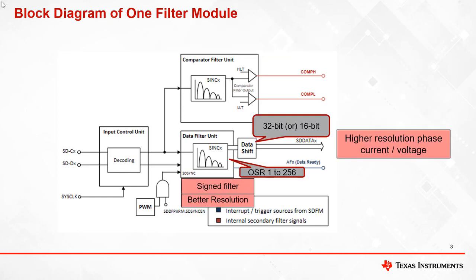The data filter provides high resolution digital output as it supports OSR settings from 1 to 256. Output of the data filter is a signed integer which can be represented in 32-bit or 16-bit format. This high resolution digital output is used in the control loop.